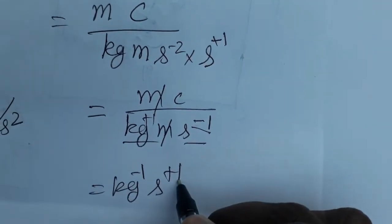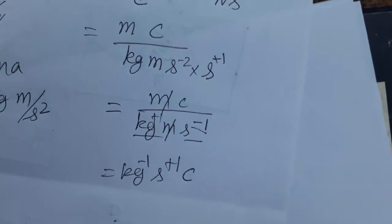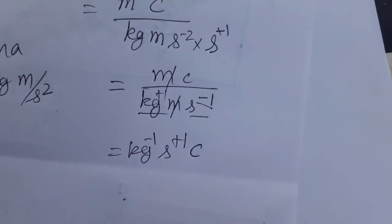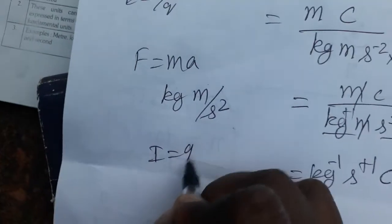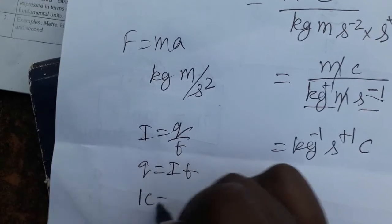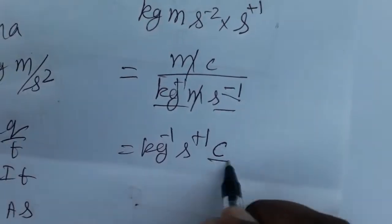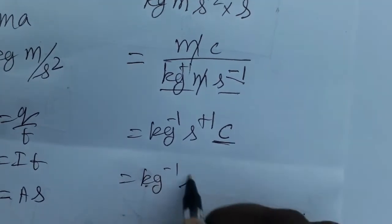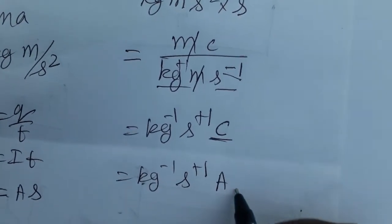The −1 in the denominator becomes +1 when moved to the numerator. If you want to express it as a dimensional formula, use current equals charge divided by time, so charge equals current times time — meaning one Coulomb equals one Ampere times one second. So instead of Coulombs, write Ampere times second.